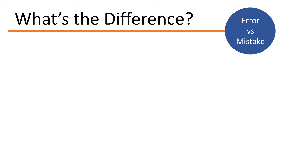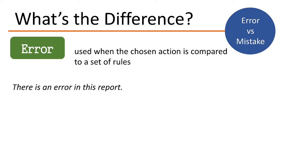The word error is used when the chosen action is compared to a set of rules. For example, there is an error in this report.